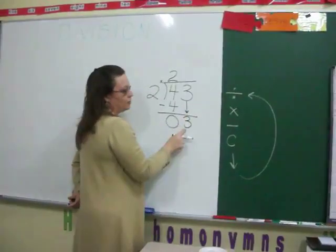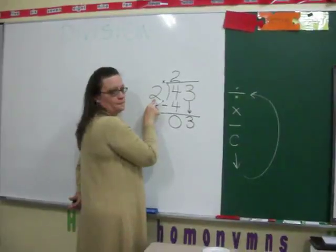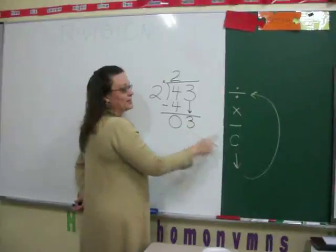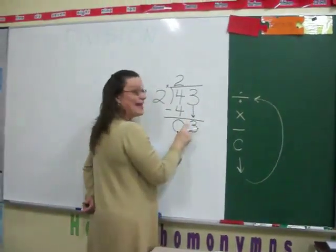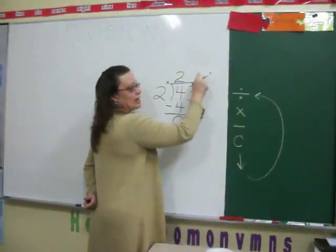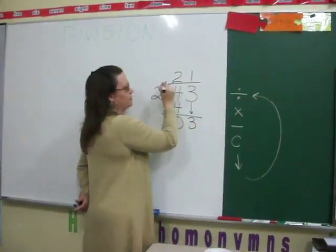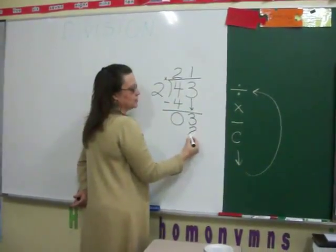I divide. 3 divided by 2. That's 1. I can only take 1, 2 out of a 3. And because I went back to the top, I put my answer back on the top in the 1 column. 1 times 2 is 2.